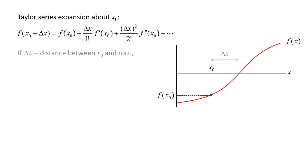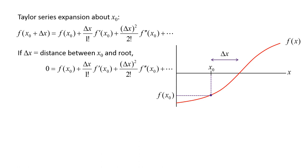If delta x is the distance from x0 to the root, then f evaluated at x0 plus delta x is the value of the function at the root, which is zero. So if we could solve this equation for delta x, we would know the exact distance from the current position x0 to the root.